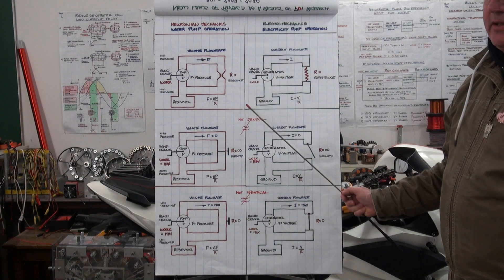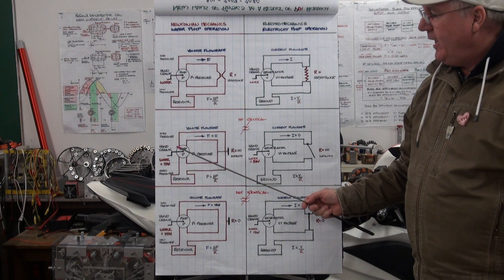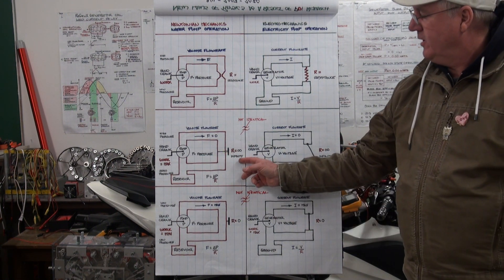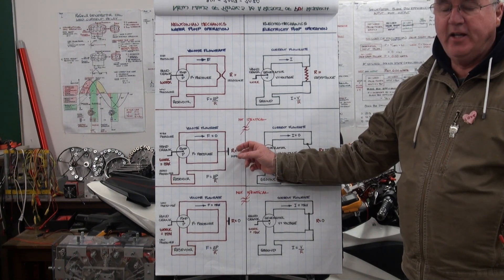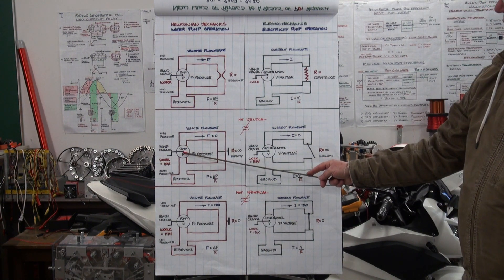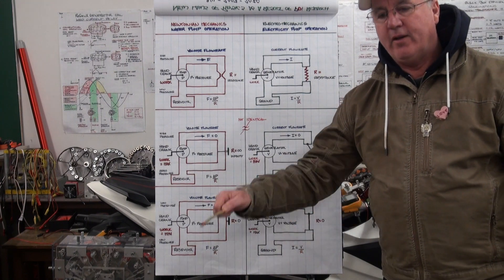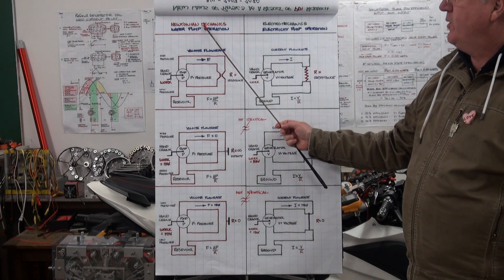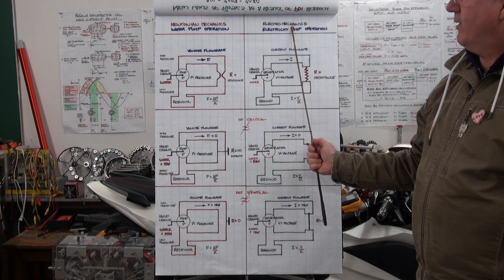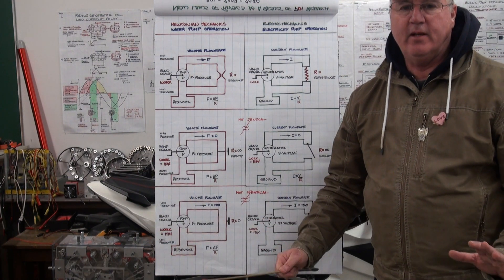As we get further into the discussion, you'll see that they're absolutely not the same. If we put a faucet and increase the resistance to infinity — meaning no water current can flow — it will be impossible to crank the water pump. Now if the Newtonian model was adequate to explain electricity or electromechanics, these two reactions would be the same. But as you're going to see, they're basically diametrically opposed.